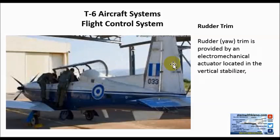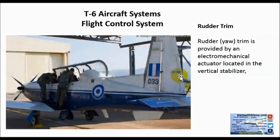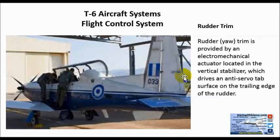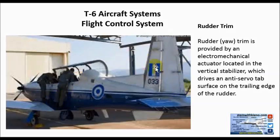Rudder trim is provided by an electrical mechanical actuator located on the vertical stabilizer — that is the actuator — and you operate it from the PCL using the control on the front of the PCL. It drives the anti-servo tab on the trailing edge of the rudder. This whole thing is the rudder, this is the servo, and this is the trim. This trim control is operated on each PCL in the cockpit.